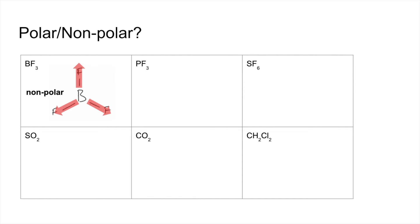PF3, which looks very similar in terms of its formula, is actually a pyramidal molecule because phosphorus is in group 5, so there's a lone pair on the P. That breaks the symmetry of the molecule, and so therefore PF3 is polar.